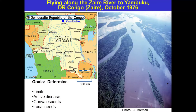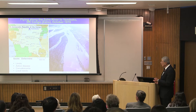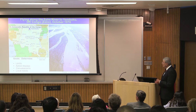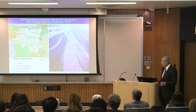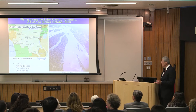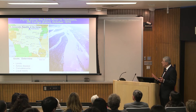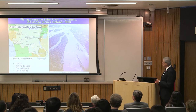Here we are in Kinshasa, and Yambuku — the epidemic area — was about 1,200 kilometers away. We talked quickly among ourselves: this epidemic is causing real havoc. Our goals were to delimit the epidemic, see if there was active disease, identify convalescents so we could begin a plasmapheresis program if needed, and determine local needs to move the entire operation north to the 120-bed hospital. We had no idea how many people were sick or how fast it was spreading.